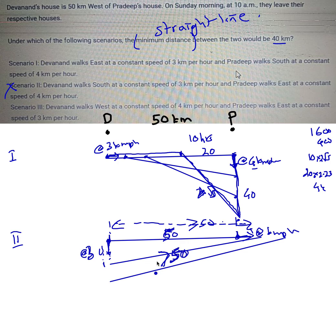Third is a very easy one: Devanand walks west, Pradeep walks east. This is a no-brainer - obviously the distance between them is going to increase. So if at all there is an answer, it is scenario one. But let's see how we do the mathematical approach.